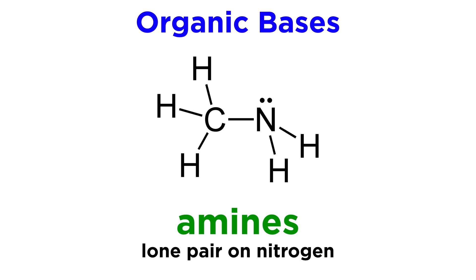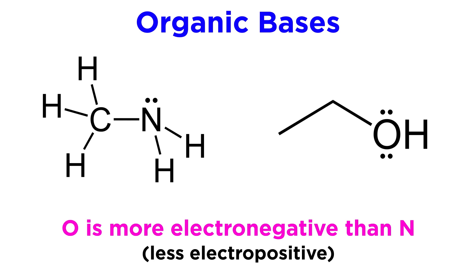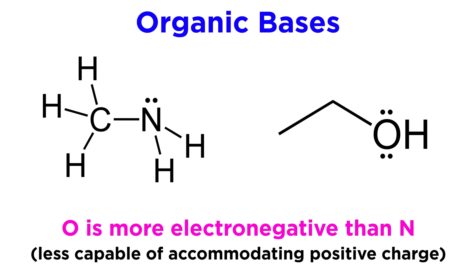Common examples of organic bases are the amines. With these, nitrogen has a lone pair that is available to accept a proton. Oxygen can also act as a base, to a lesser extent, in the form of water or alcohols, since oxygen has two lone pairs, especially in the presence of a strong acid. Being that oxygen is more electronegative than nitrogen, which means it is less electropositive, it is less capable of accommodating the resulting positive charge upon protonation, so these compounds are less basic than amines.